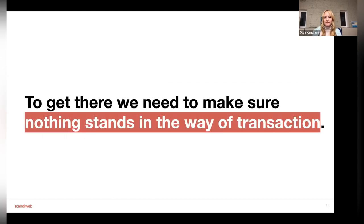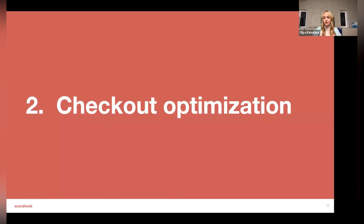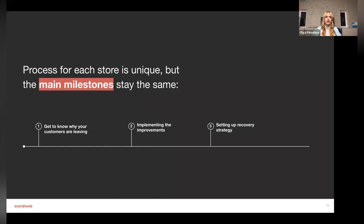To get there, we need to make sure nothing stands in the way of the transaction. This is why we start our checkout optimization programs. For each store it's different, but the main milestones stay the same: first, understand the exact reasons why people are leaving; then identify solutions and improvements to keep people on the page; and additionally, set up a recovery strategy to bring back people who already left.